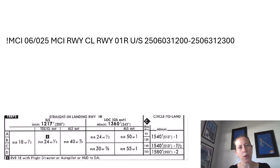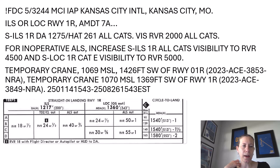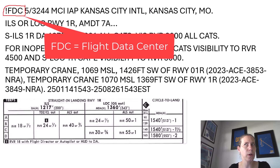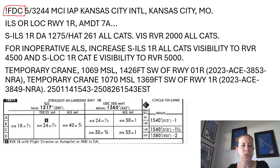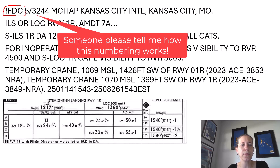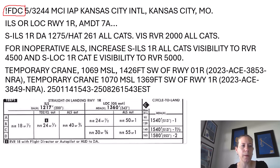That was a pretty easy NOTAM — didn't really do a whole lot to my minimums. Now let's take a look at a longer one: this is a FDC — Flight Data Center — NOTAM. To be totally honest, I'm not 100% certain of the numbering system they use for FDCs. If anybody knows, I'd love to know more — you can comment, and I'm sure some smart viewer is going to comment about this numbering system.